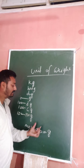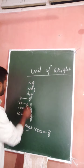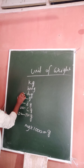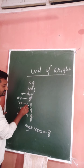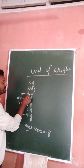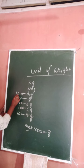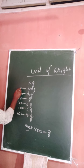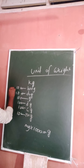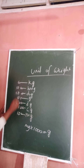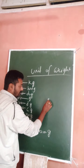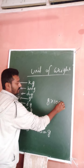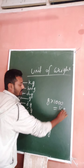Similarly, when you multiply gram by 10 you will get decagram. Note the difference: desigram and decagram are different. When you multiply decagram by 10 you will get hectogram, and again by 10 you will get kilogram. So gram multiplied by 1000 gives you kilogram.